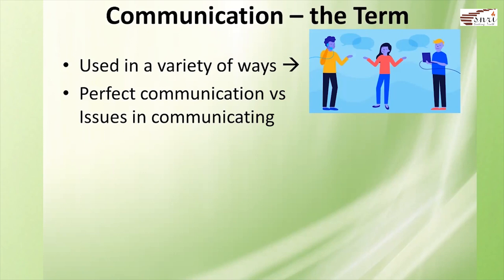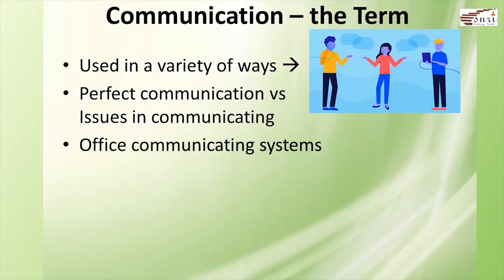When we look at perfect communication, the perfect example would be a couple that is in love. For them, everything is perfect — they can understand each other well, relate to each other well, and understand the gestures and symbols that each other pass on in daily life. We also come across terms such as office communicating systems — the gadgets used in a normal office setup that include computers, telephones, printers, etc. — basically anything that can be used to convey or pass on information from one source to another.